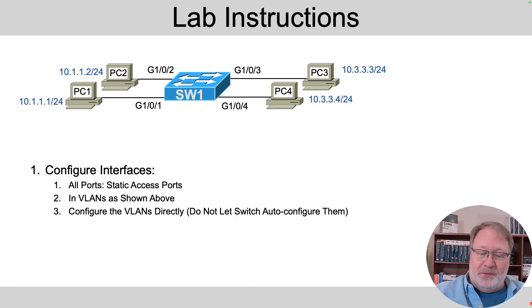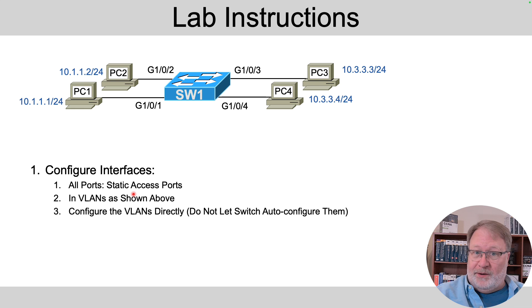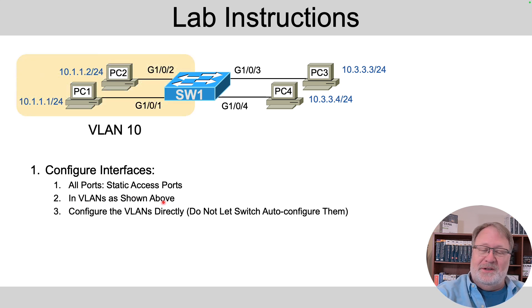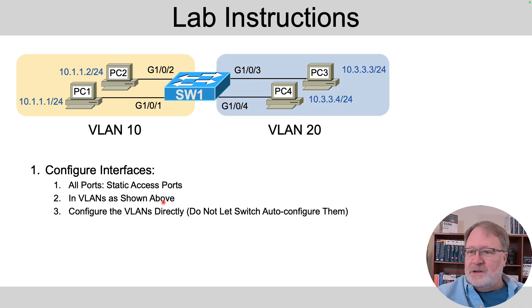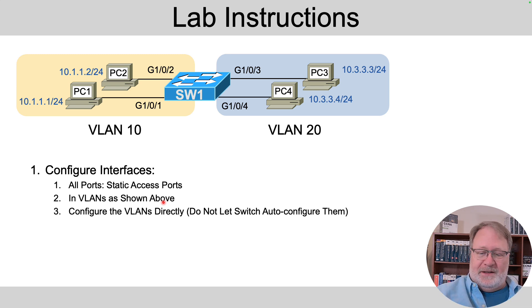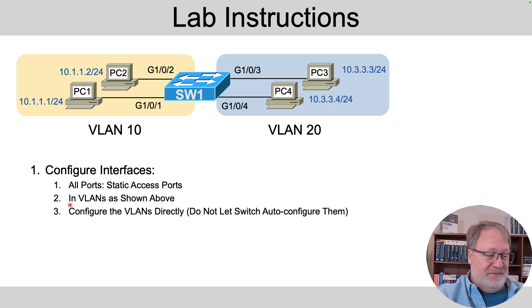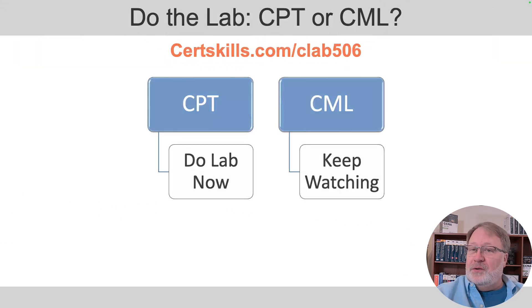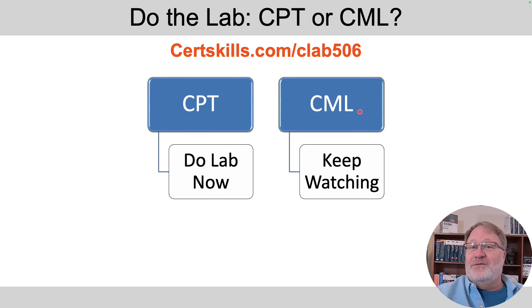The lab instructions are straightforward: all ports are to be static access ports. The two left-hand ports go into VLAN 10, and the two right-hand ports go into VLAN 20. Configure the VLANs first, then place the interfaces in the VLANs — that's what item three refers to. If you're using Cisco Packet Tracer, that's all you need. If you're going to use Cisco Modeling Labs, keep watching for a few more hints.